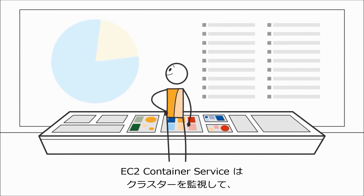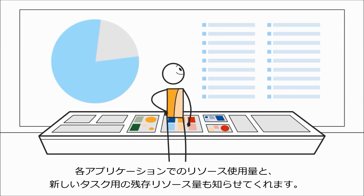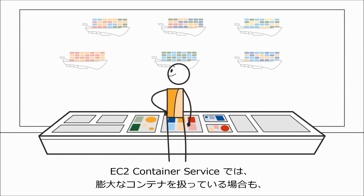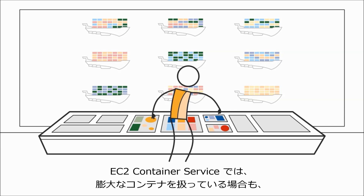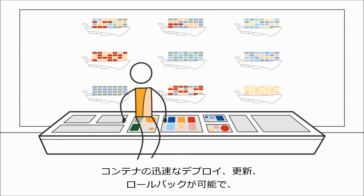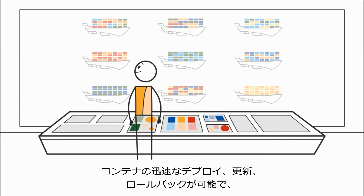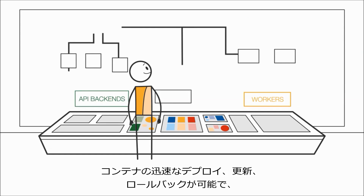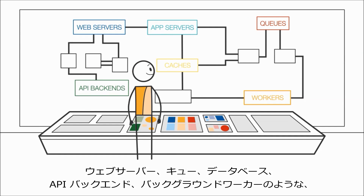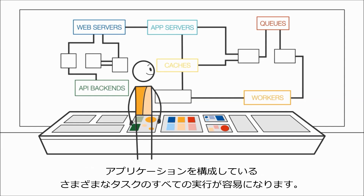EC2 Container Service also monitors your cluster and tells you how much resources are being used by each application and how much is left for new tasks. EC2 Container Service allows you to quickly deploy, update, and roll back containers regardless of whether you're dealing with tens or thousands of containers, making it easy to run all the different tasks that make up your application such as web servers, queues, databases, API backends, and background workers.